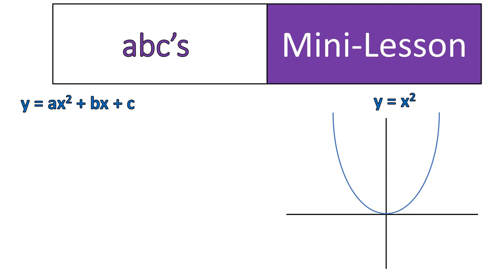When we change the values of a, b, and c, we start to see changes in this graph. So let's take a look at what happens when we change these values.